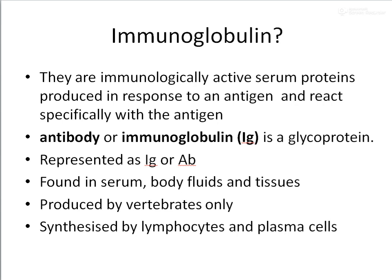Antibody is also known as immunoglobulin and it is a glycoprotein, represented as Ig or Ab for our convenience. They are serum-active proteins found against antigens and capable of reacting with the antigen. They are mainly found in the serum, body fluids, and tissues. Immunoglobulins are produced only by vertebrates in response to antigens, and the cells which mainly produce them are the B lymphocytes — especially plasma cells — when activated by a particular antigen.